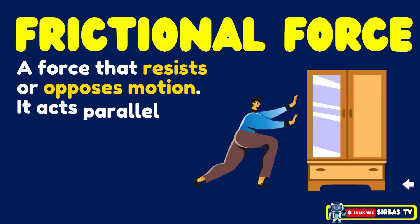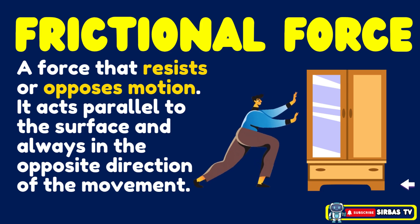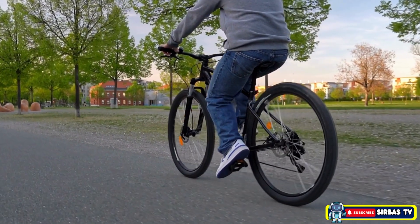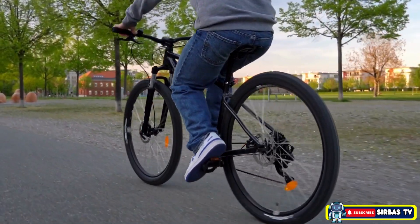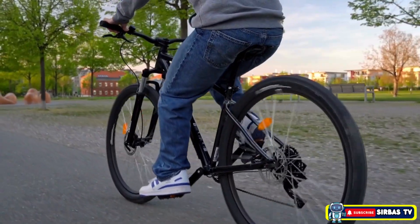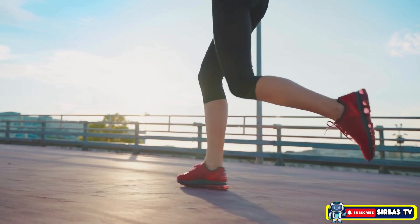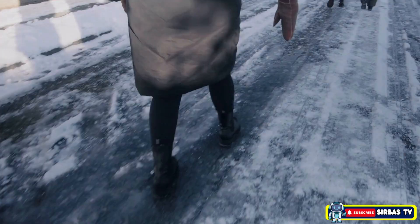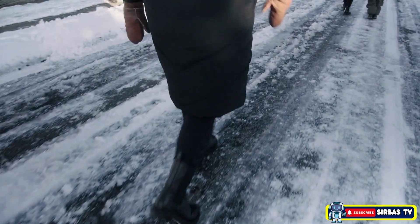Frictional force is a contact force that resists or opposes motion. It acts parallel to the surface and always in the opposite direction of the movement. It is the reason why things don't slide forever once you stop pushing them. When you ride a bike, friction between the tires and the road helps you move forward and slows you down when you stop pedaling. When you walk or run, friction between your shoes and the ground prevents you from slipping. Imagine walking on a slippery floor — without friction, your shoes would not grip and you'd slide everywhere.